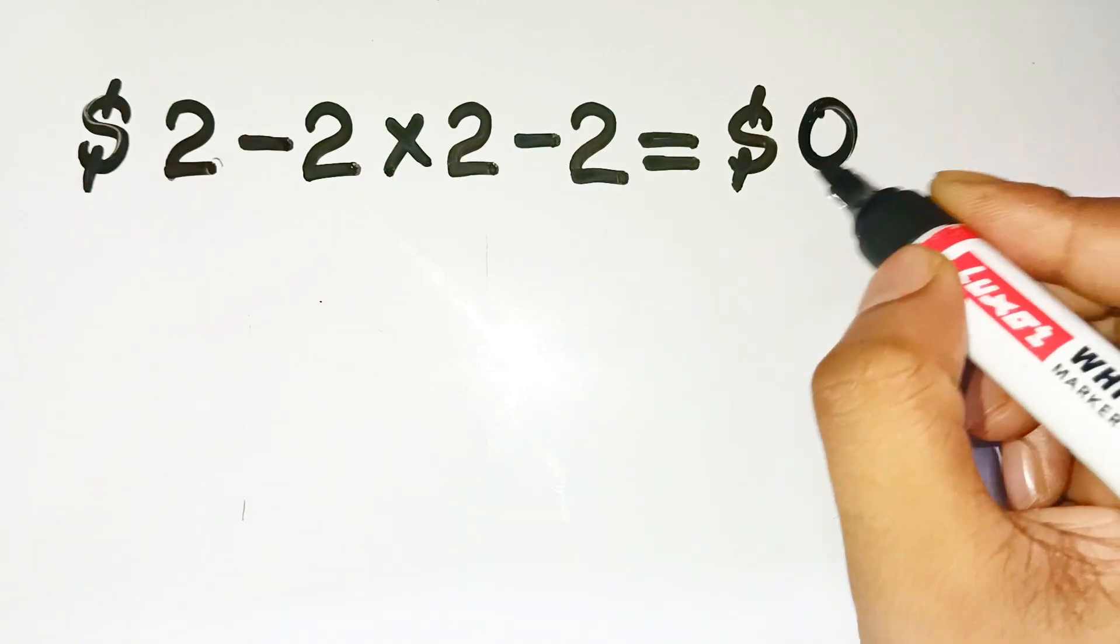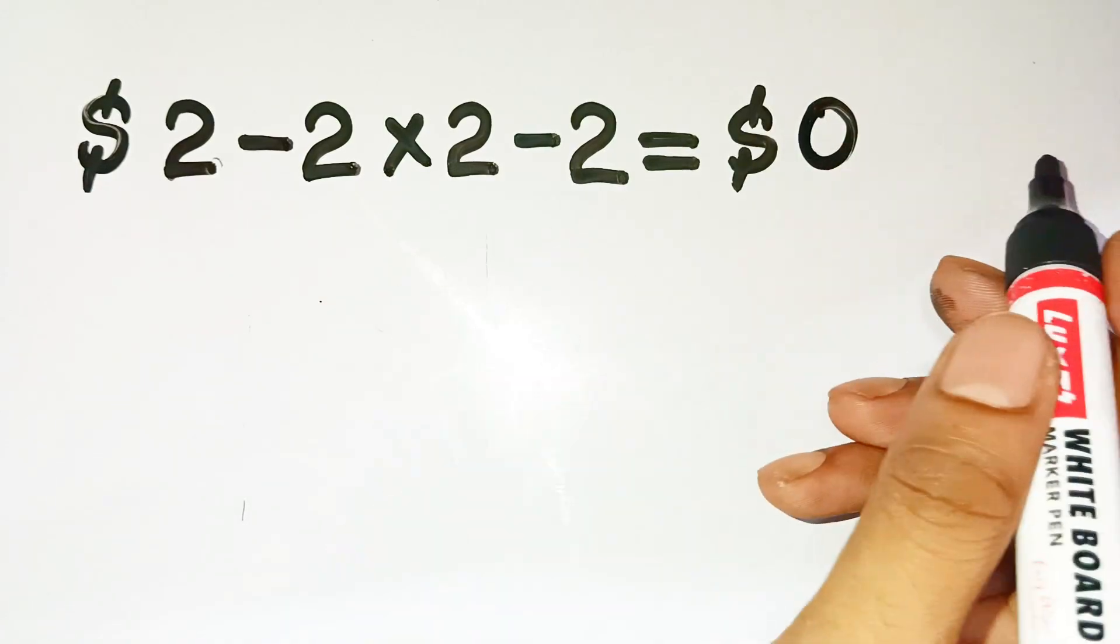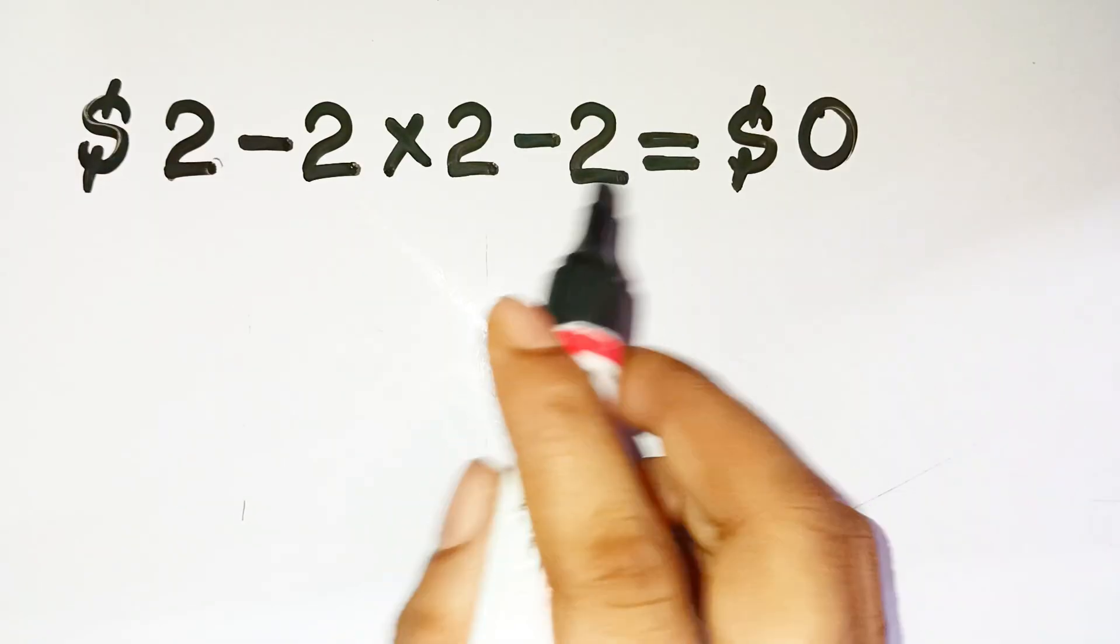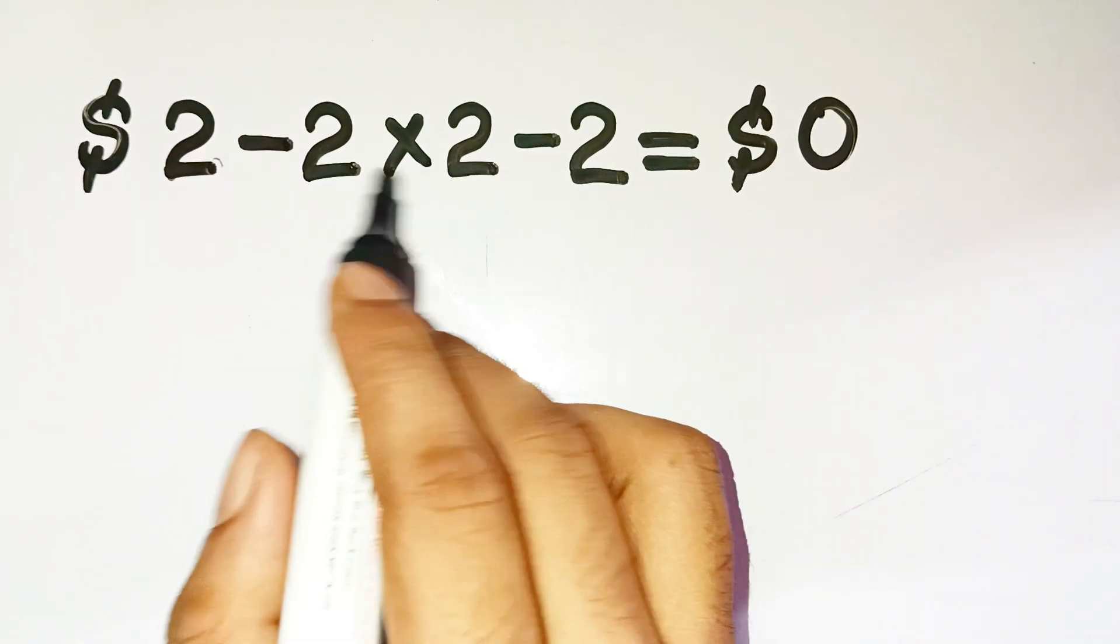You'd assume the answer is zero dollars, but the truth is totally different. This one's tricky because it looks like basic arithmetic, just a few twos and some minus signs, right?